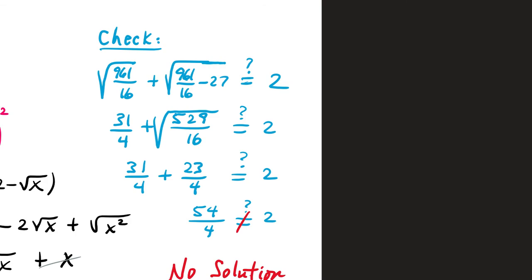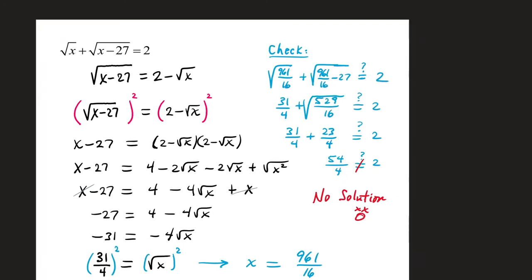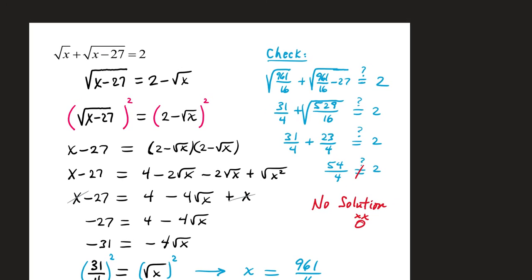Since the number we checked from the end of our problem doesn't work in the original problem, that's the only candidate we had, but because it doesn't check, there's no solution to this equation. And that sometimes is a real heartbreaker because you put all this blood and sweat into working a math problem, and the answer you get at the end, you don't get to keep.